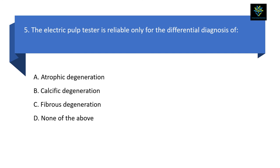Next question: the electric pulp tester is reliable only for the differential diagnosis of — Option A: atrophic degeneration; Option B: calcific degeneration; Option C: fibrous degeneration; Option D: none of the above. In atrophic degeneration, calcific degeneration, and fibrous degeneration, we will get a false negative result. So the answer is Option D — none of the above. In all three of these conditions, we get a false negative result — remember this.